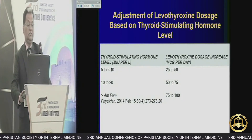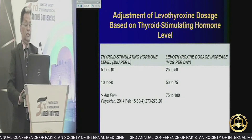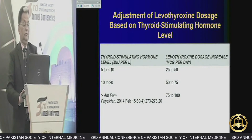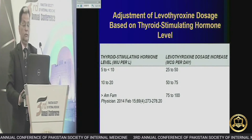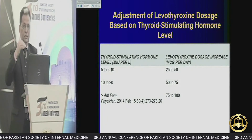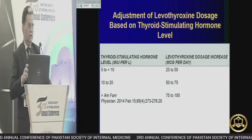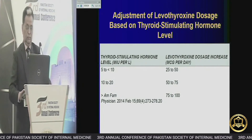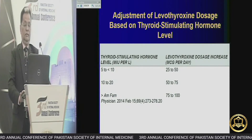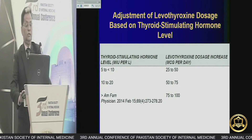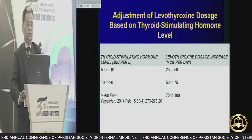How should we adjust the dose of thyroxine in hypothyroidism? If the TSH level is less than 10, give 25 to 50 micrograms of thyroxine, gradually increasing the dose rather than starting full dose from day one. If TSH is 10 to 20, give 50 to 75 micrograms per day. If TSH is more than 20, we may need 75 to 100 micrograms of thyroxine per day.